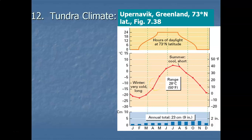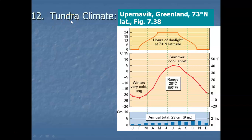Lecture number five — we're going to finish up world climates with two cold or very frigid climates. Climate number 12 is called the tundra climate, and like the previous climate, the boreal forest climate, this one is again named after the natural vegetation region that dominates, which will be covered in an upcoming lecture very soon.